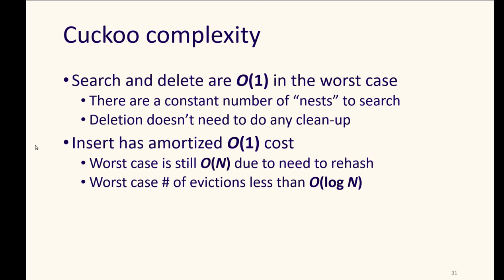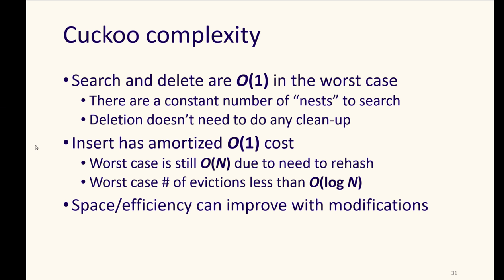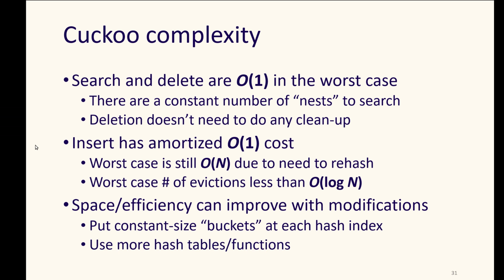The worst case of the number of evictions is less than log n. And the space inefficiency can be improved with some modifications, such as adding buckets at hash indexes so that we've got some constant size amount that we might have to search within those buckets, just like we have the constant number of hash tables. As long as we keep them constant sized, then the search within those buckets is still constant. And we could also use more hash tables and more hash functions for those hash tables, and that gives us more places to try to hash things into when we have to do those evictions.